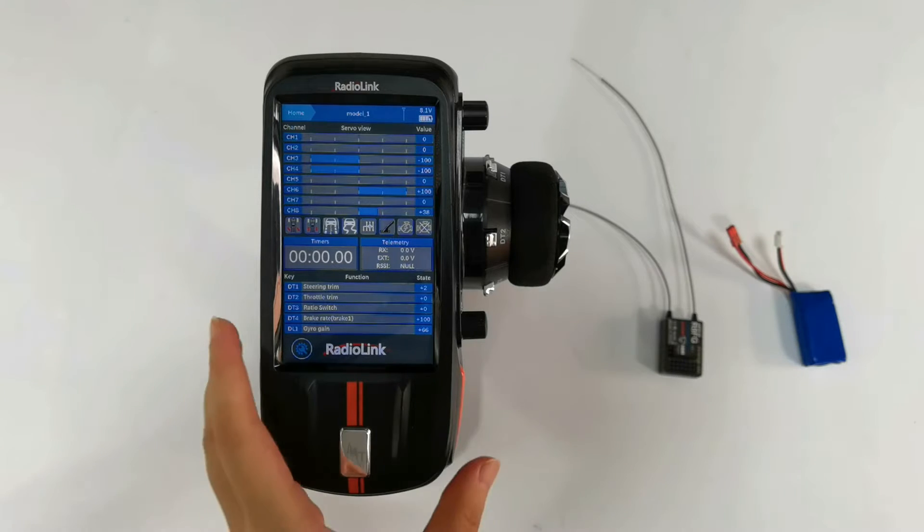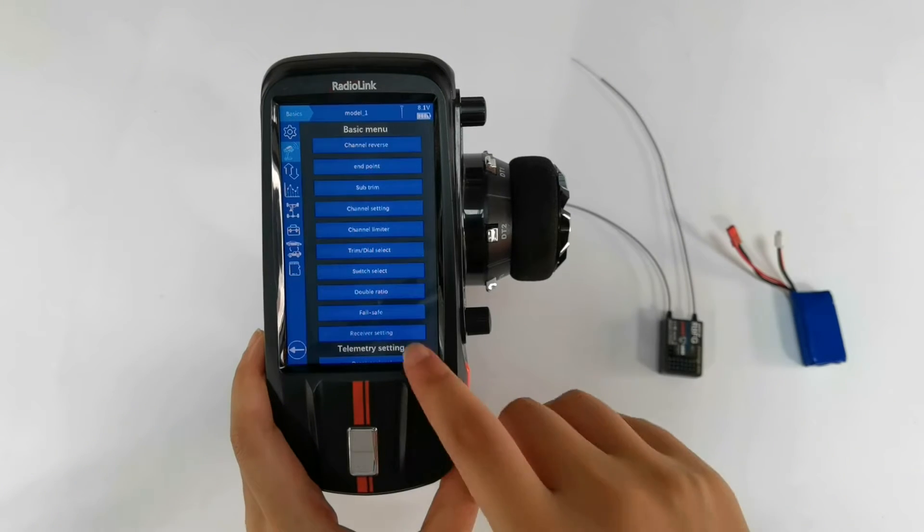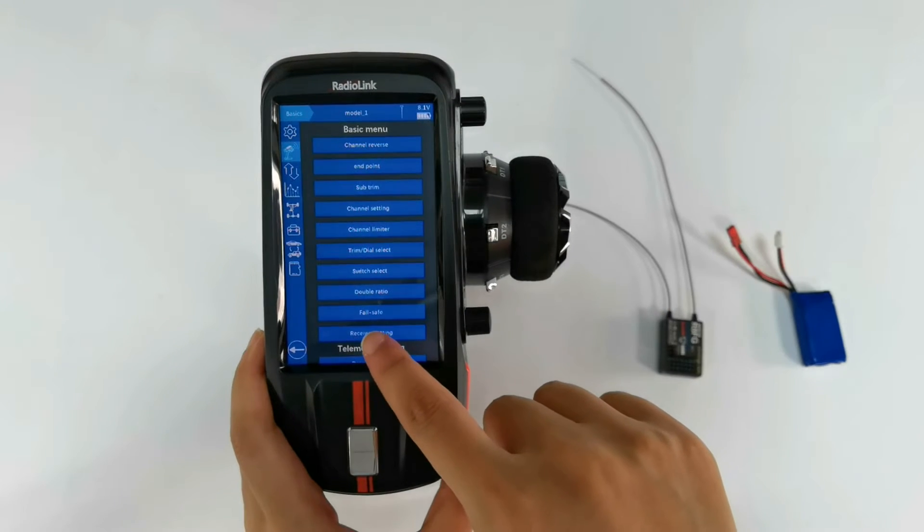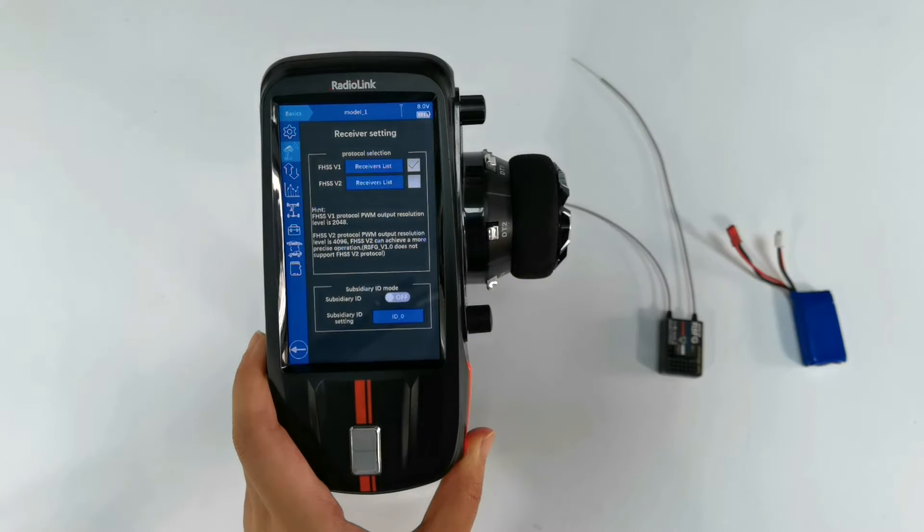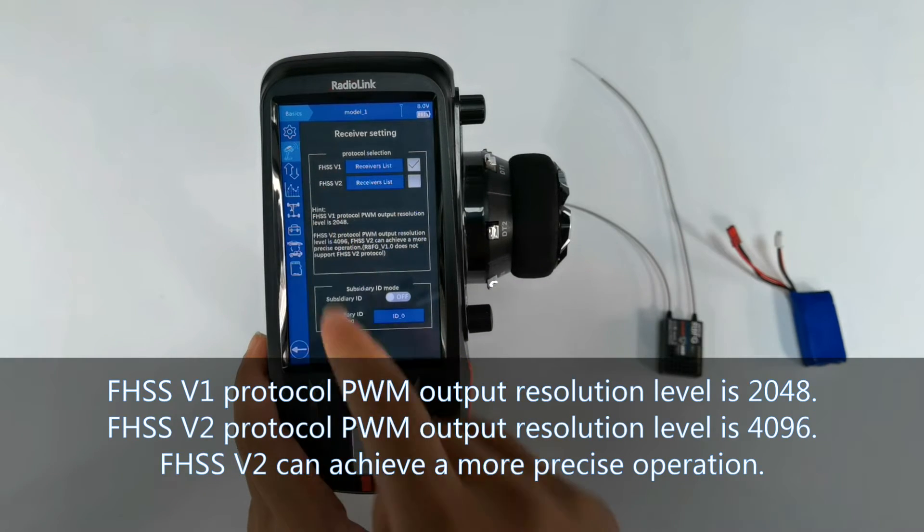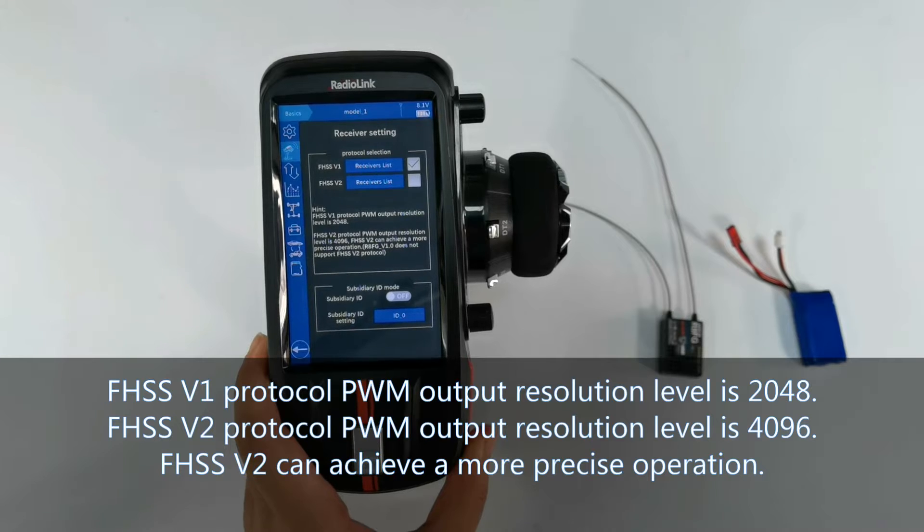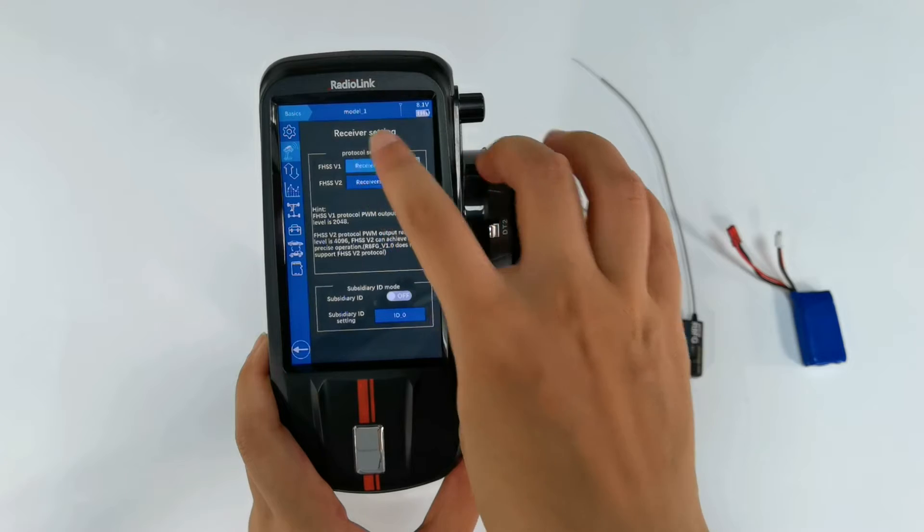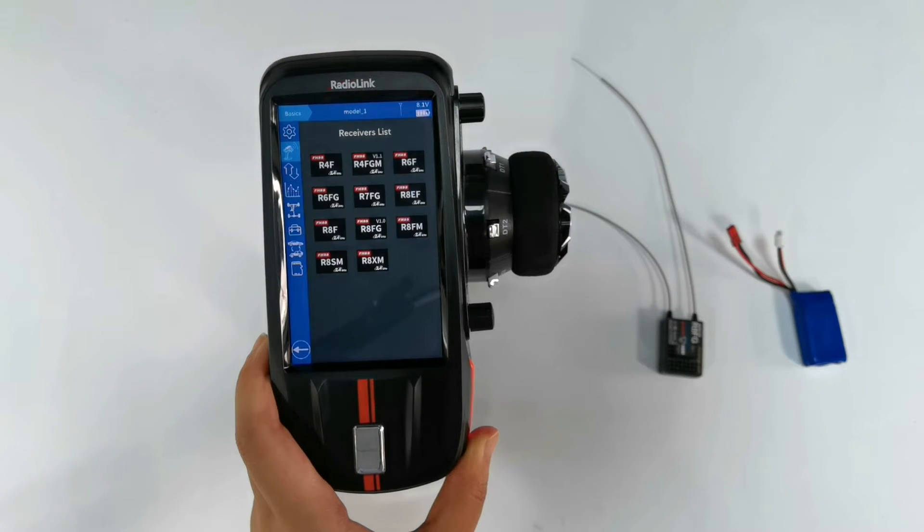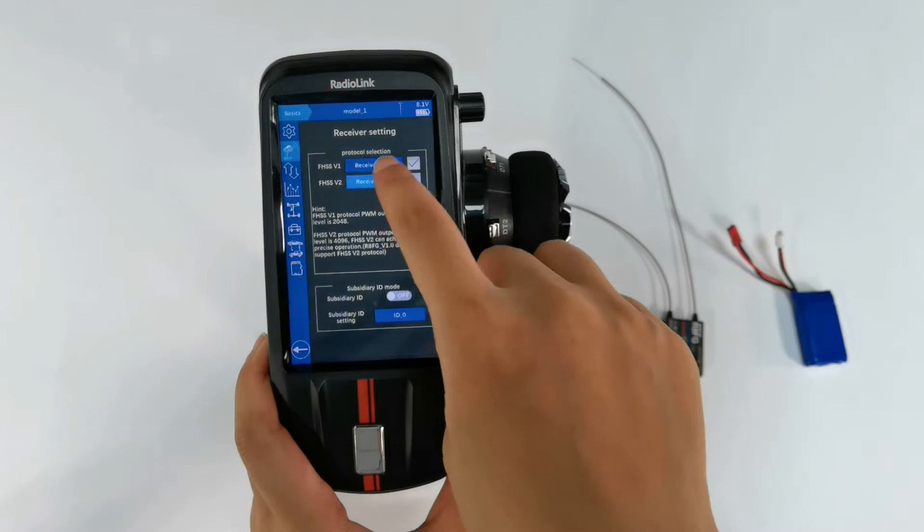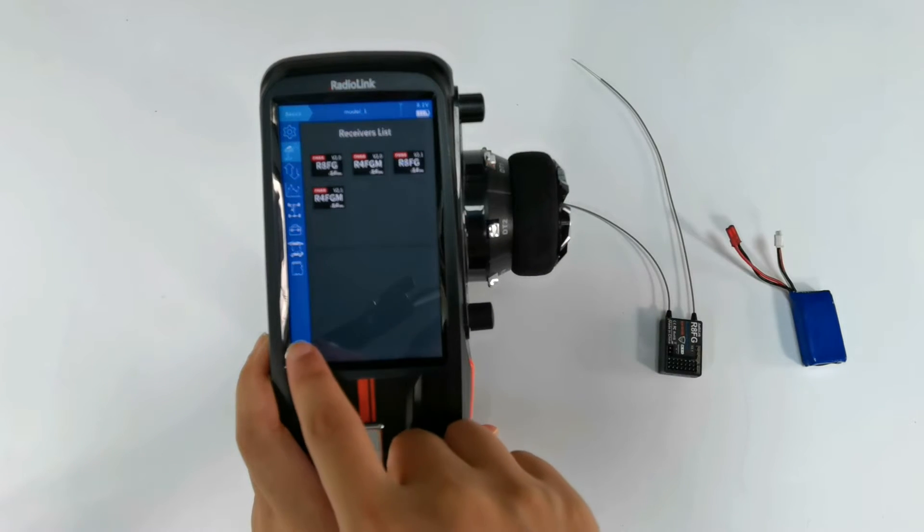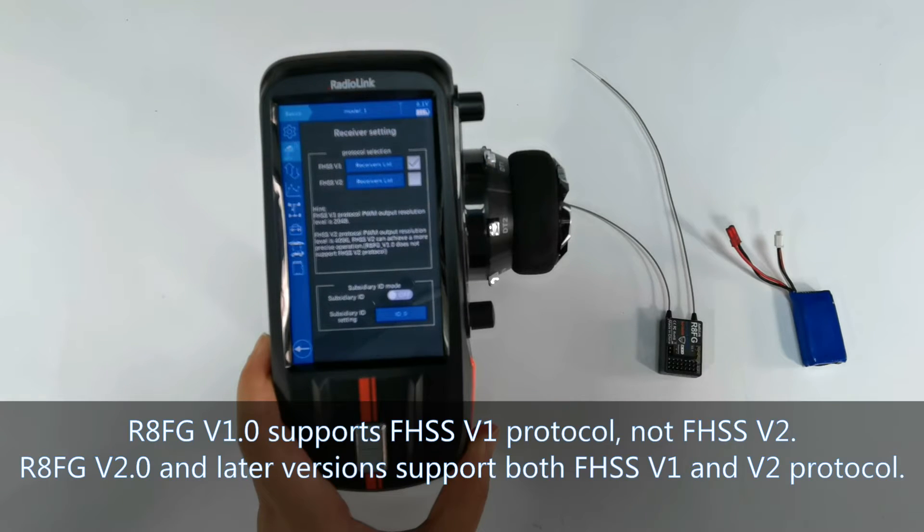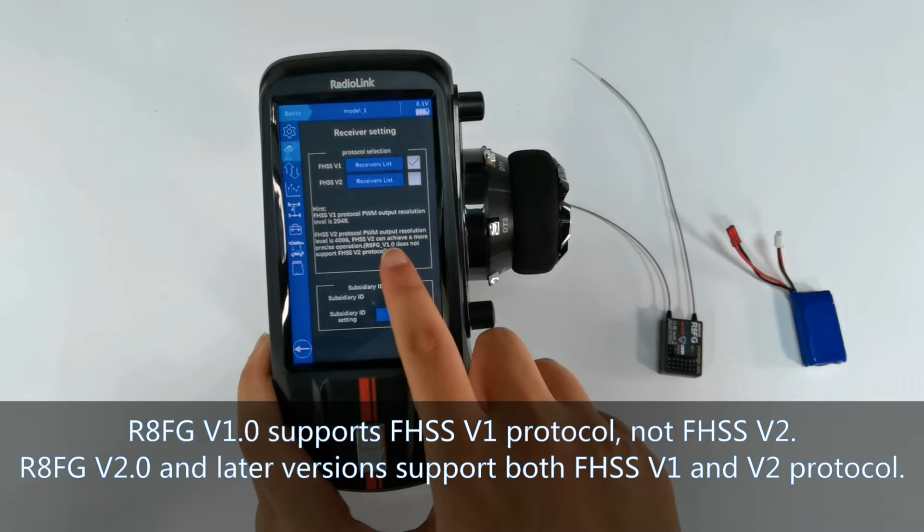Enter the basic menu, receiver setting, and then select FHSS v1 or FHSS v2 protocol. Click Receiver List here to check whether your current receiver belongs to FHSS v1 or v2 protocol list. Here is v2 protocol.